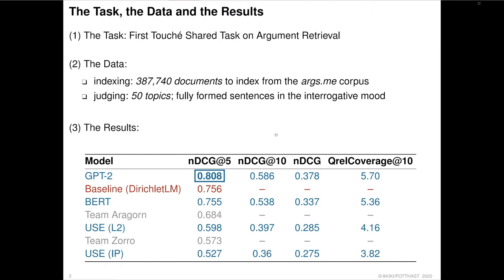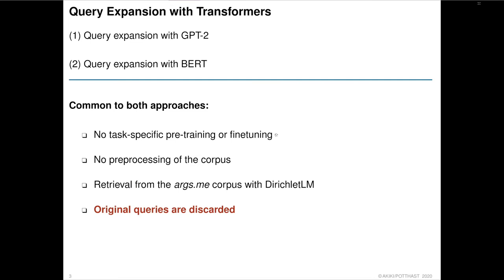I will only be presenting these two approaches in this talk, providing a high-level view and sparing you the implementation minutiae. Let me start with what our two approaches have in common. They both perform query expansion using vanilla transformer models that have not been pre-trained or fine-tuned on the corpus. The corpus itself hasn't been pre-processed in any way — no fancy NLP, no mining of argumentation or quality facets, just indexing the raw corpus.